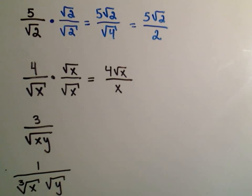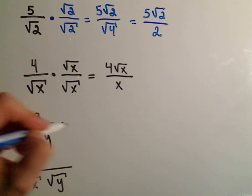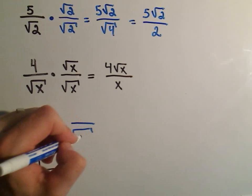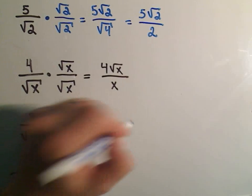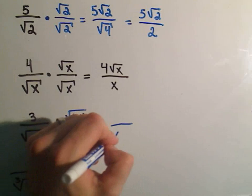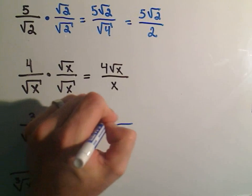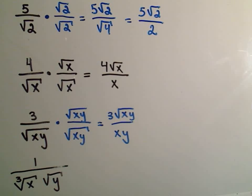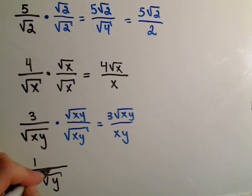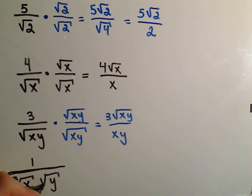Same thing for 1 over the square root of xy. I can multiply top and bottom by the square root of xy. On the bottom, the square roots cancel and I'm left with x times y. On top, I still have my square root of xy. If there's a root in the bottom and you rationalize the denominator, you're going to end up with a radical in the top. You can't get rid of all radicals altogether — that's just not possible, unless they happen to be perfect squares.